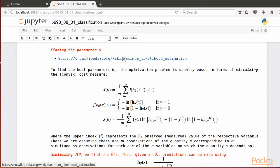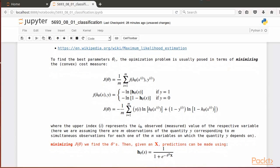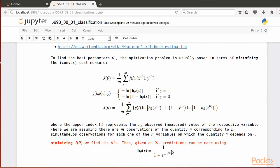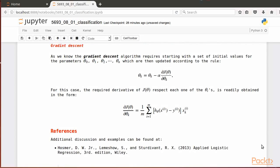The minimization process gives us the optimal parameters thetas by plugging an input vector x and the obtained thetas into the hypothesis h underscore theta of x. One way of minimizing the j cost function is using the gradient descent algorithm.